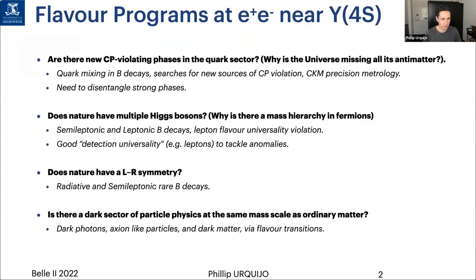When it comes to a long-term flavor program, you need a long-term vision, and we usually drive that with open questions. These are really quite applicable to e-plus e-minus near Upsilon 4S. Firstly, are there new CP-violating phases in the quark sector? We know the universe is missing all its antimatter, but we don't know why. We're looking at quark mixing and B decays, new sources of CP-violation, using CKM precision metrology, and from a phenomenology perspective, we also need to disentangle strong phases.